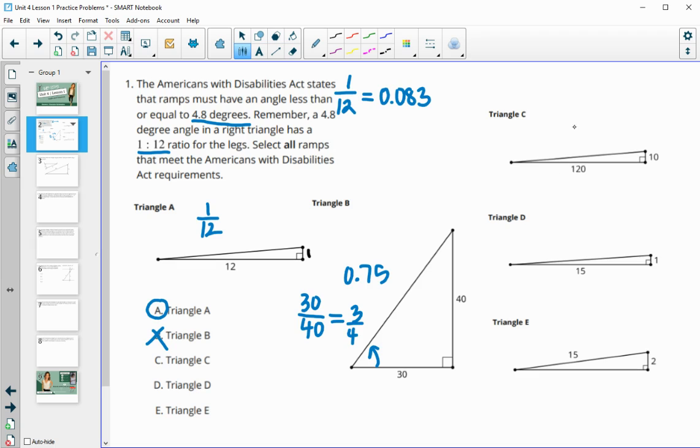Triangle C is a ratio of 10 over 120. And if you simplified that by dividing each by 10, it would be 1 over 12. So that's equal to the ratio or equal to a 4.8 degree angle.